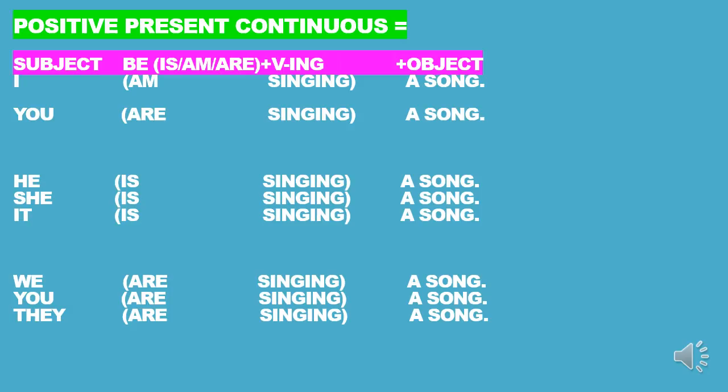For the third person plural — we, you, they — the verb to be should be 'are'. Then the verb 'sing' is transformed into verb-ING form, becoming 'singing', and 'a song' is the object. So: I am singing a song, you are singing a song, he is singing a song, she is singing a song, we are singing a song, you are singing a song, they are singing a song.